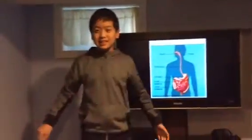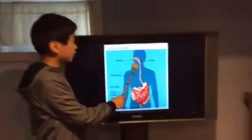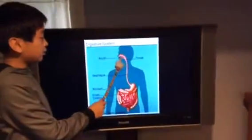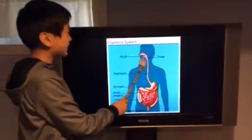This is the Digestive System Explained. First, the food enters through the mouth and the saliva breaks down the food into smaller chunks of food.